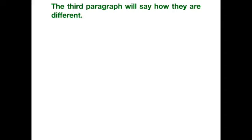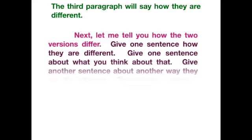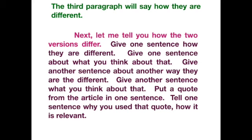Your third paragraph is now going to say how they're different. Start with a transition sentence like: 'Next, let me tell you how the two versions are different.' Then follow the same format — give one sentence about how they're different, and then a sentence about what you think. Give another difference, then another sentence about that. If you want, add a quote and then explain how it's relevant. For example, in tug of war, the rope was different, or the number of people was different, or the rules were different. There are lots of ways it could be different.